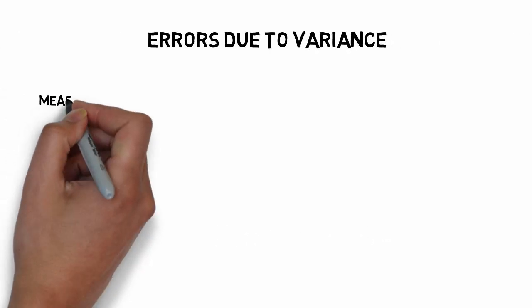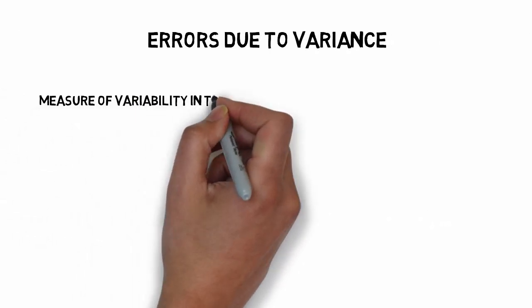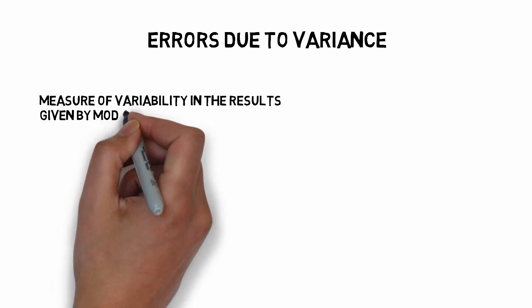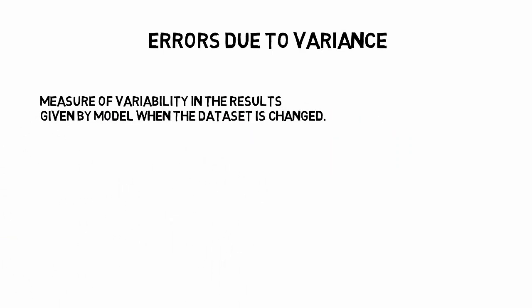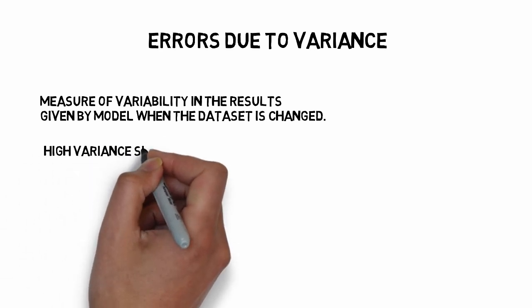Variance is a measure of variability in the results predicted by our model. To put this in a simple way, variance quantifies the difference in prediction when we change the data set. When we have high variance,